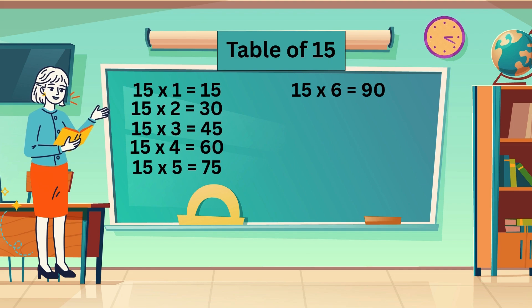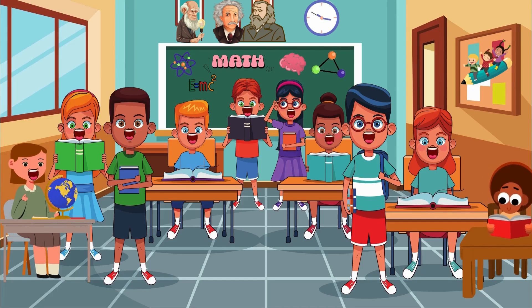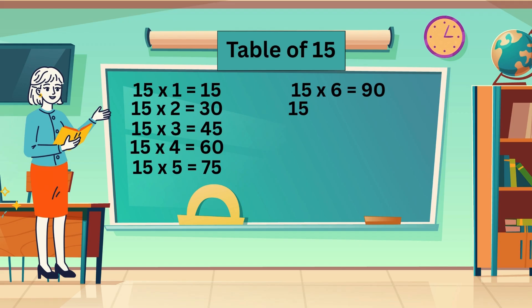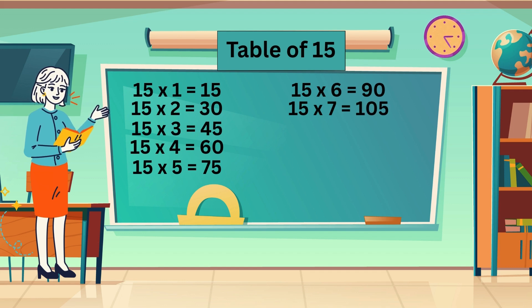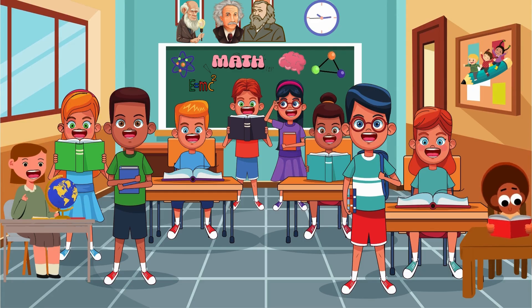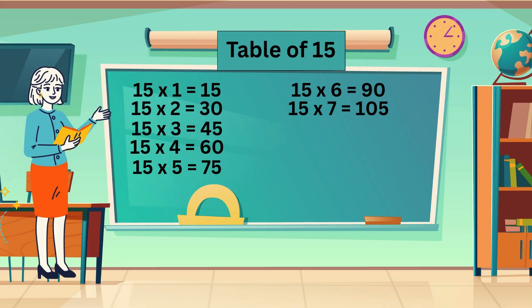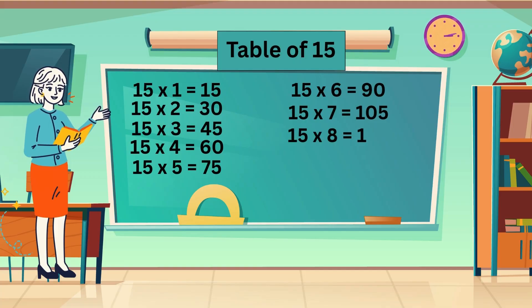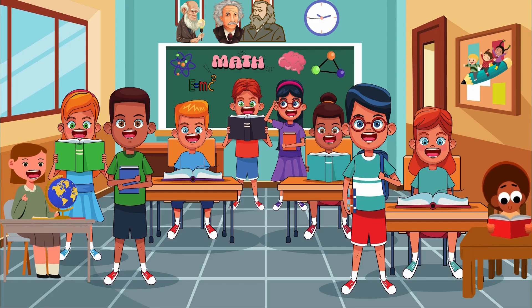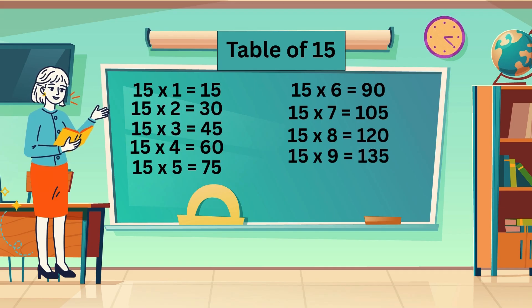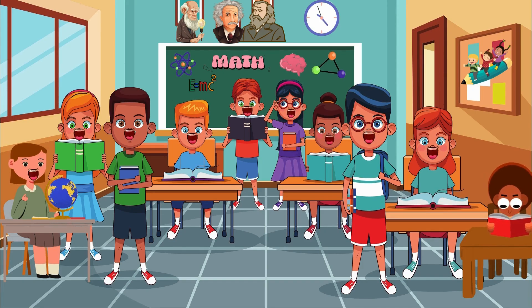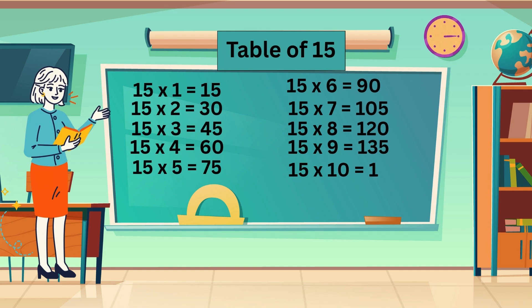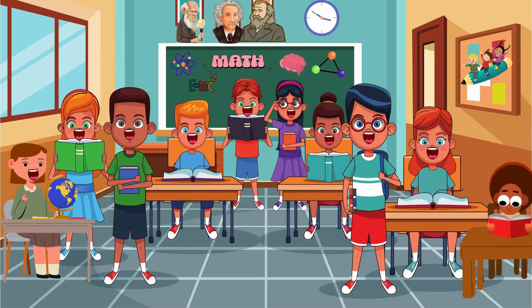15 sixes are 90. 15 sevens are 105. 15 eights are 120. 15 nines are 135. 15 tens are 150.